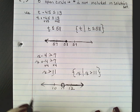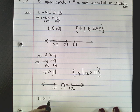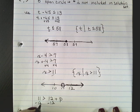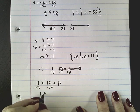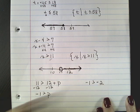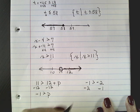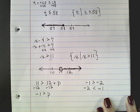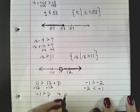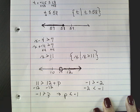What if the variable is not in the front? Say we have 11 is greater than 12 plus p. I subtract 12 from both sides and get negative 1 is greater than p. I know that negative 1 is greater than negative 2, so I always want my variable to come first. If negative 1 is greater than p, then that means p must be less than negative 1.